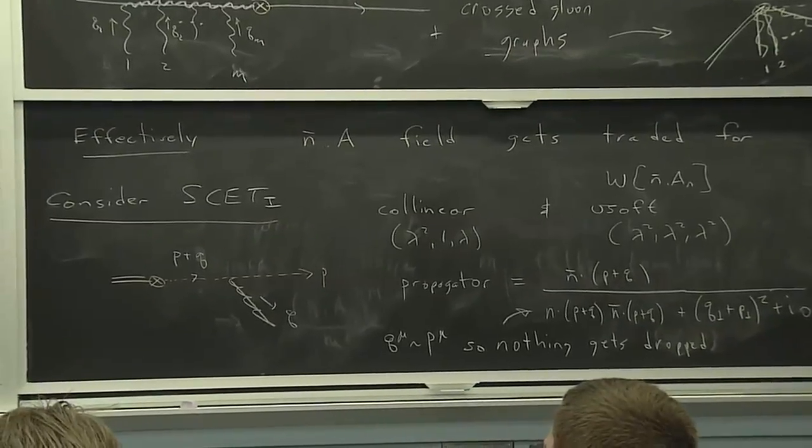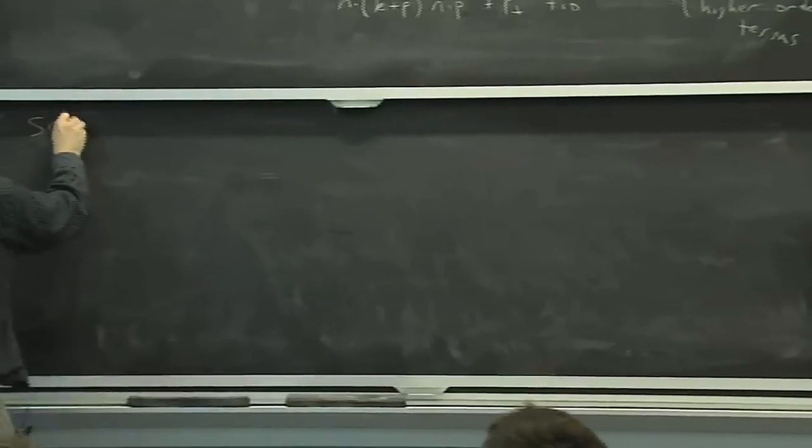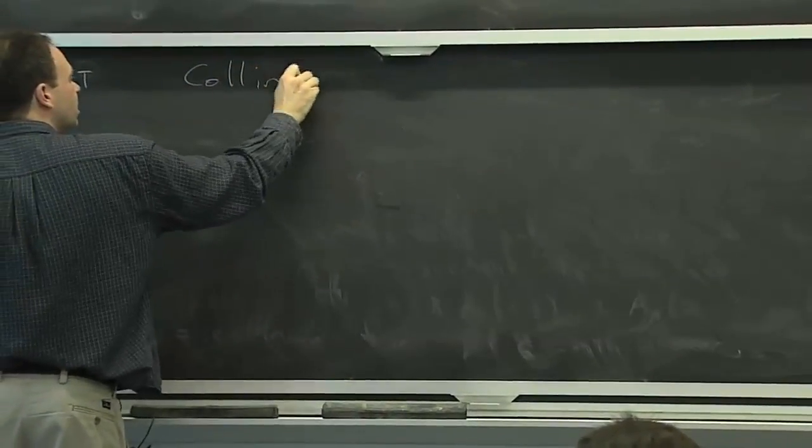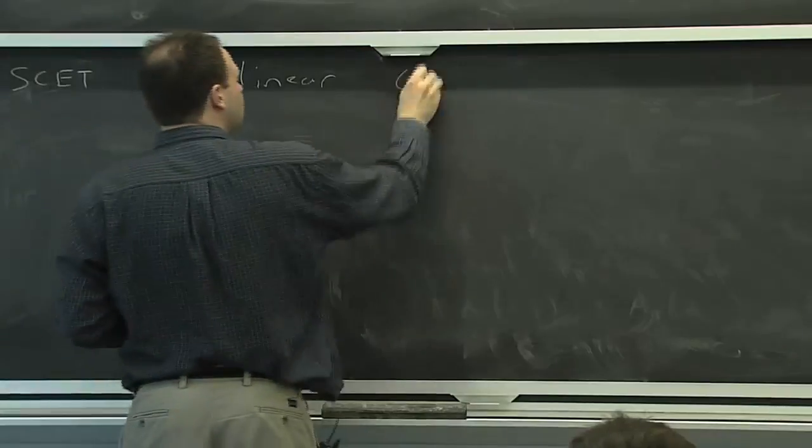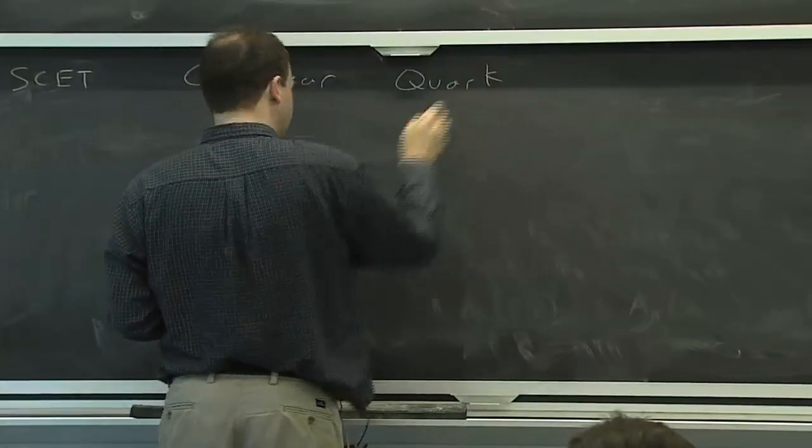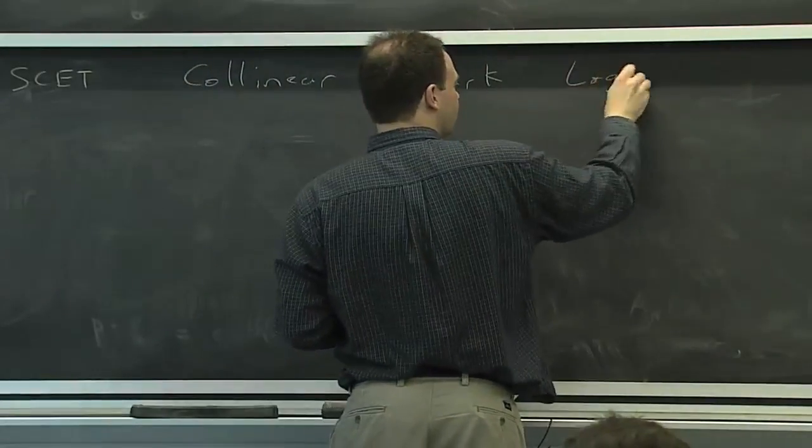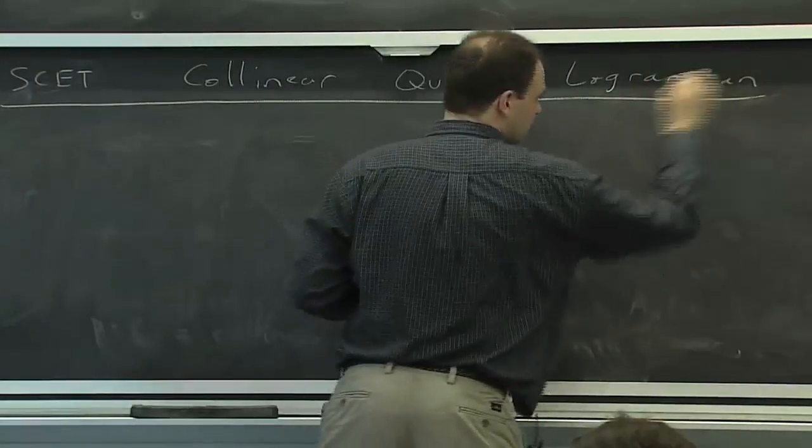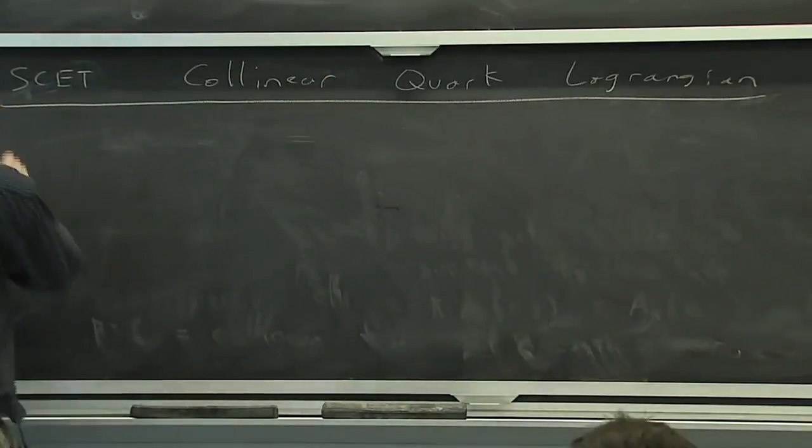So what should the leading-order effective theory do? What should we demand of it? We've basically now set up all the things that we need to think about in order to figure out what the leading-order effective theory is. So let's do that. OK. So what do we demand of this Lagrangian?